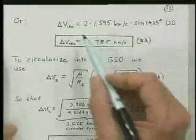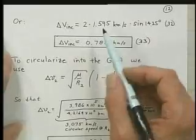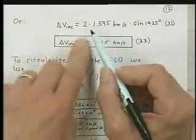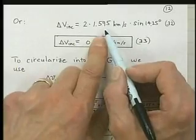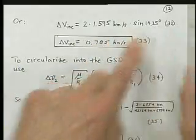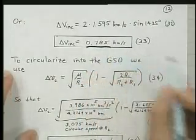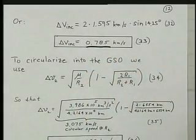The delta V inc, that is the delta V that we need to change the inclination from 28.5 degrees to 0, is 2 times the velocity at apogee times sine of half of 28.5 degrees, and we get 0.785 kilometers per second.